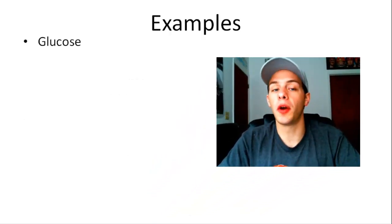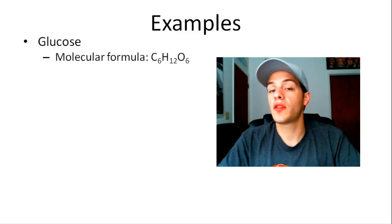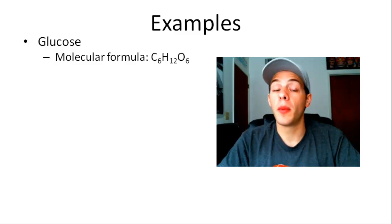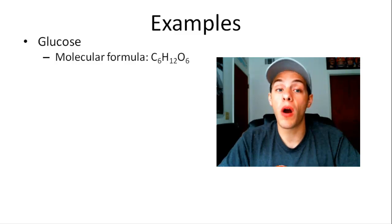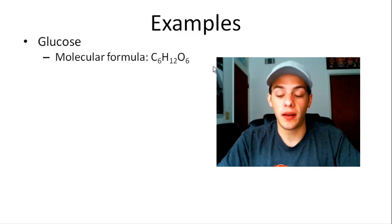Let's start with glucose. Glucose has 6 carbon atoms, 12 hydrogen atoms, and 6 oxygen atoms. So the molecular formula — which shows exactly how many atoms of each element there are — is C6H12O6.